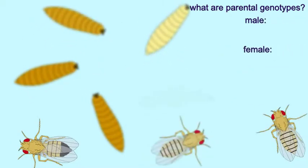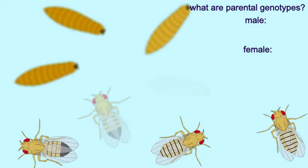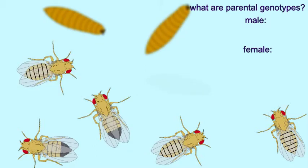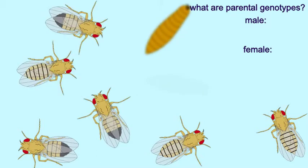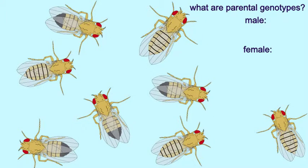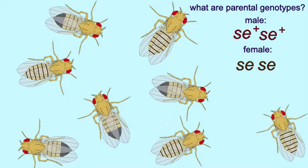the male must have been homozygous for the wild-type allele. If the male were heterozygous, then half of the offspring would have possessed sepia eyes. So the male was homozygous for the wild-type allele of the sepia gene.